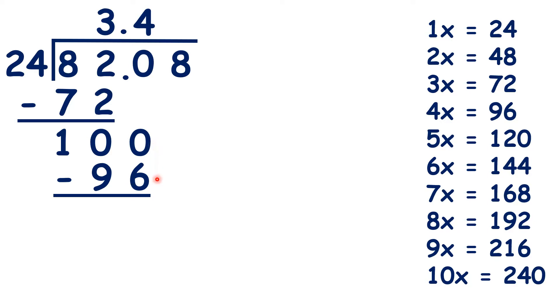Now 100 minus 96 is 4, and we can bring down the last digit, bring down the 8. 48 divided by 24 is exactly 2, so we can write 2 in our answer, and we have nothing left to divide.